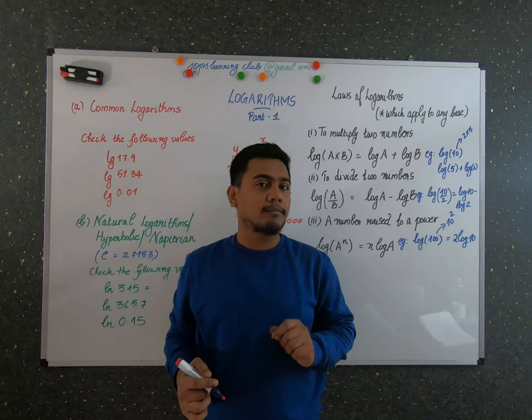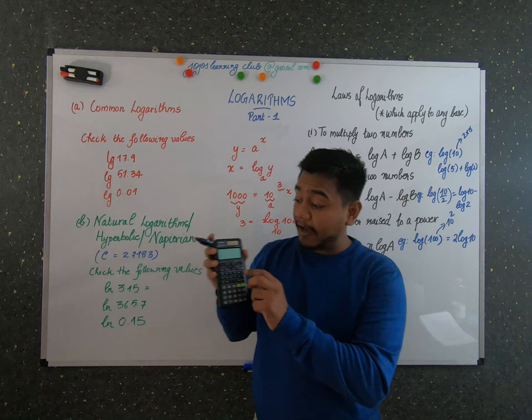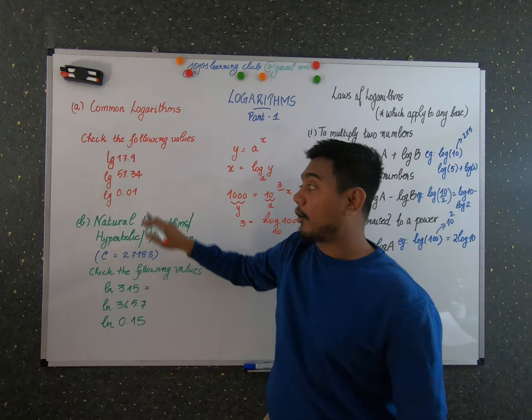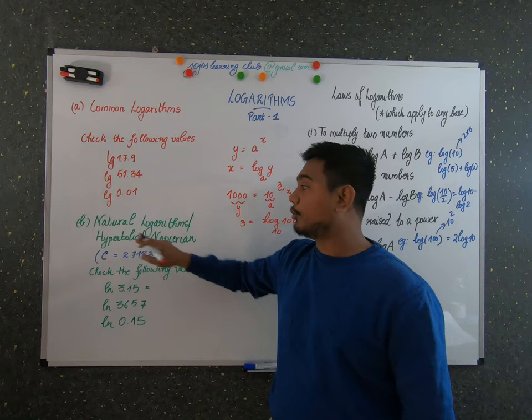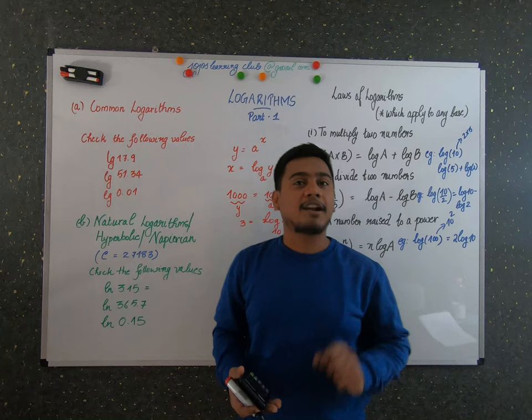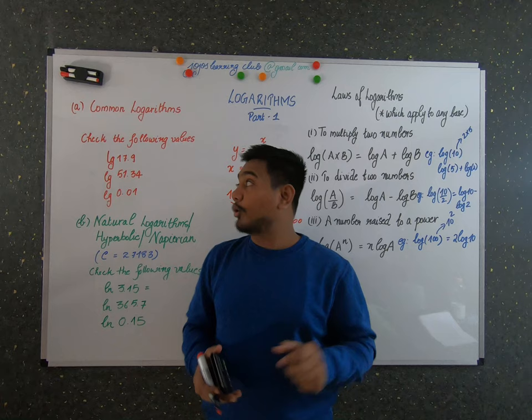There are mainly two types of logarithms used in general calculations. In a scientific calculator, you can see two sections: log and ln. The first type is common logarithm and the other is natural logarithm, also called hyperbolic or Naperian logarithm. Common logarithms are logarithms having a base of 10.